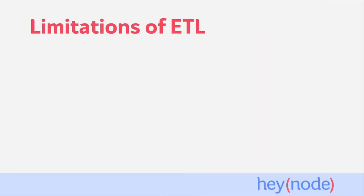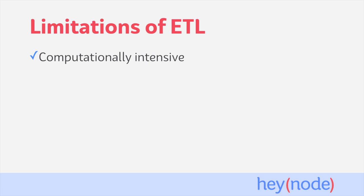There are, of course, some limitations when using an Extract, Transform, and Load pipeline. For one, it can be computationally intensive. When you're working with large amounts of data — gigabytes and petabytes, for example — extracting and transforming the data can be no small task. Depending on how you're sourcing and transforming your data, this can put serious strain on the system that you run your pipeline on, and also on the source system you're extracting the data from. Depending on the size of your data and how it may grow in the future, it may take quite a bit of time to run an ETL process from start to finish.